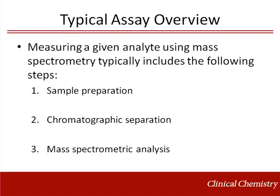In general, an assay that uses a mass spectrometer as a final detection method will involve a sample preparation step, chromatographic separation, and measurement with a mass spectrometer. For sample preparation, this can be as simple as a dilution or as complex as solid phase extraction or immuno extraction. To obtain chromatographic separation, gas chromatography or liquid chromatography is most often used.